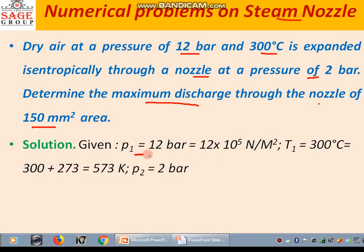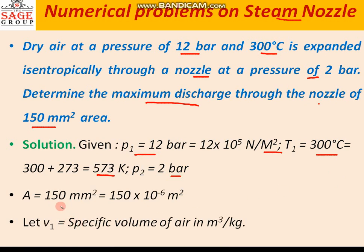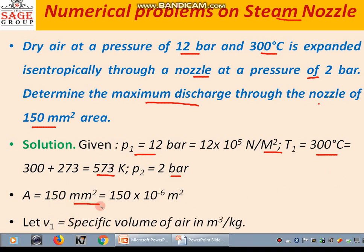Here, pressure P1 is given equal to 12 bar, that is 12 into 10 to the power 5 newton per meter square. T1 is 300 degree centigrade, so it is 300 plus 273, that gives 573 Kelvin. Pressure P2 is given as 2 bar. Area is given as 150 square millimeter, converted to square meter: 150 into 10 to the power minus 6 square meter. Let V1 be the specific volume of air in cubic meter per kg.